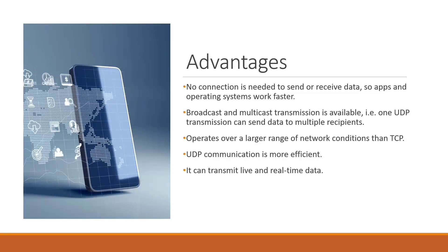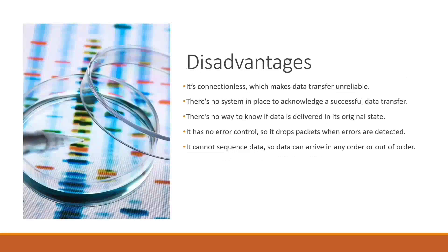Disadvantages of UDP: First, it is connectionless, which makes data transfer unreliable — there is no assurance that data being transmitted and received is correct. Second, there is no system in place to acknowledge a successful data transfer. Third, there is no way to know if data is delivered in its original state or in sequence order. It has no error control, so it drops packets when errors are detected, and data can arrive in any order.